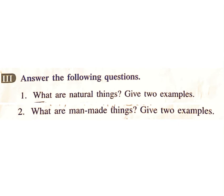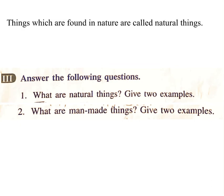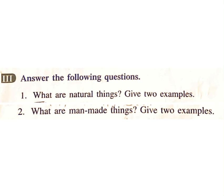Answer the following questions. 1. What are natural things? Give two examples. Answer: Things which are found in nature are called natural things. Examples: plants, animals, sea, stars, sun, moon.